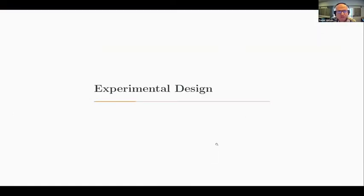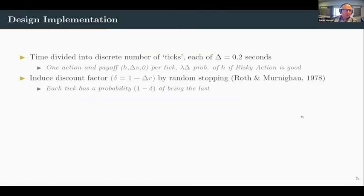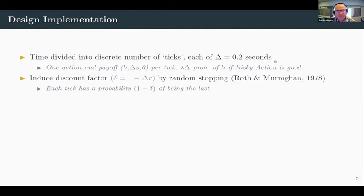Moving on to the experimental design, we necessarily need to go from continuous time to a discrete time implementation. We divide time into a discrete number of ticks, where each tick is relatively short so we are near continuous time. We do other things for the discrete approximation that I won't go into, but our discrete approximation flows very closely to the continuous one.